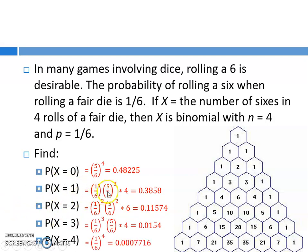These five probabilities represent the probability distribution for a binomial distribution. If you were to make a table, getting zero successes has this probability, one has that, and so on. You've got to be thinking there must be an easier way — there is, but let's look at this just a little bit more.